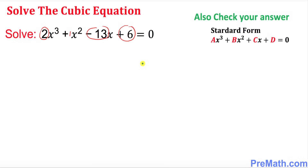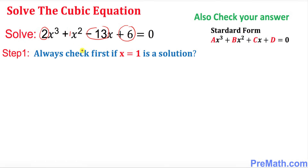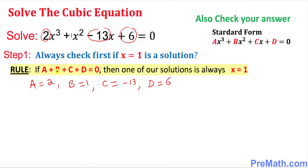The very first step is to check whether x = 1 is a solution, because that's easy to find. The rule states that if a + b + c + d = 0, then x = 1 is a solution. In our case, 2 + 1 + (-13) + 6 = -4, which is not 0. So x = 1 is not a solution.